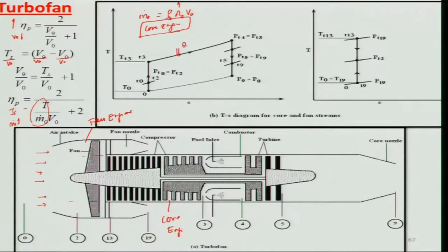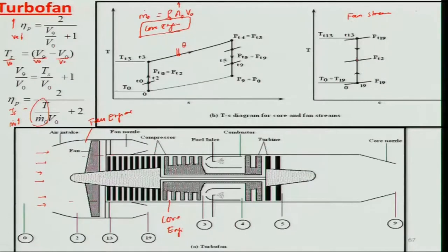In the T-s diagram, the core cycle goes: air intake (0→2), compression (2→3) which includes both fan and compressor, heat addition in the combustion chamber (3→4), turbine expansion (4→5), and expansion in the core nozzle (5→9). For the fan stream, compression (2→13) is the fan, followed by expansion to P19 in the fan nozzle. For an ideal cycle, these processes are isentropic (vertical in the T-s diagram).